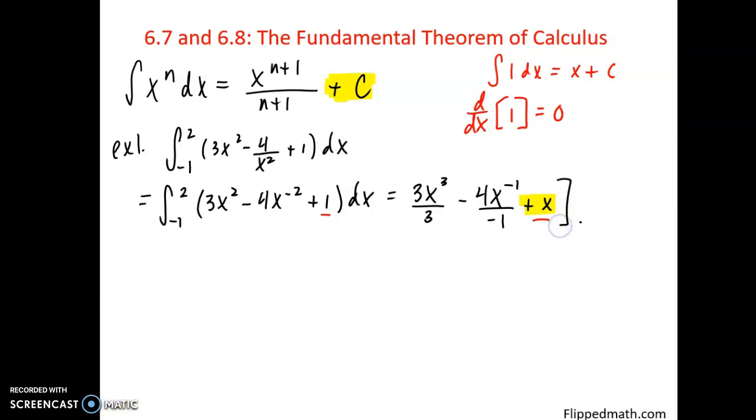All right, now I'm going to evaluate that from negative 1 to 2. So now I can use my fundamental theorem, where I plug in my upper bound, my 3s cancel, so I get 2 cubed plus 4 divided by 2 plus 2, minus the answer I get when I plug in my lower bound. So negative 1 cubed plus 4 divided by negative 1 plus negative 1. And I should keep these in parentheses so you can see where the substitutions occur. You evaluate and find an answer for me.